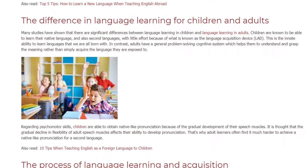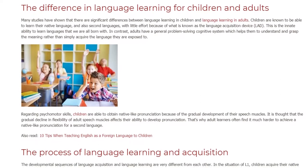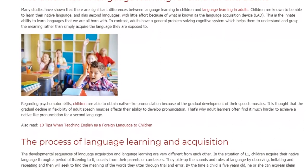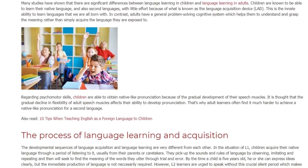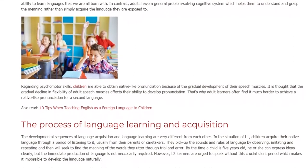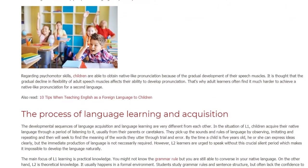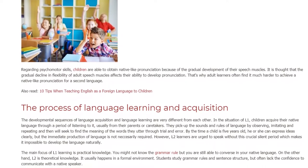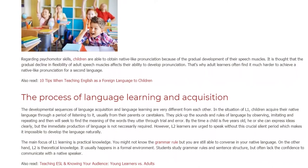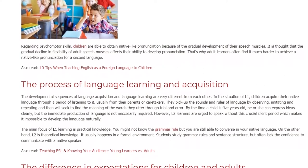The Process of Language Learning and Acquisition. The developmental sequences of language acquisition and language learning are very different from each other. In the situation of L1, children acquire their native language through a period of listening to it, usually from their parents or caretakers. They pick up the sounds and rules of language by observing, imitating and repeating, and then seek to find the meaning of the words they utter through trial and error. By the time a child is 5 years old, he or she can express ideas clearly, but the immediate production of language is not necessarily required.